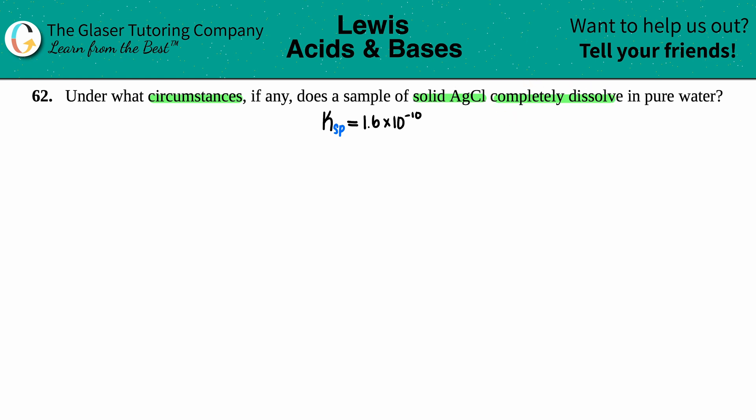So when they say completely dissolve, that means no solids produced, right? No precipitate. So if that's the case, if we're talking about solubility and we don't want any of that solid to be produced, chances are we're going to have to work with our solubility product. So I went to the back of the book to find out what the Ksp value is for AgCl and it's 1.6 times 10 to the negative 10.